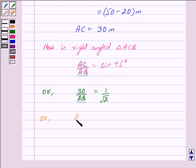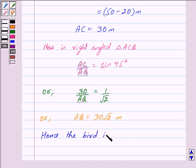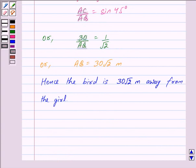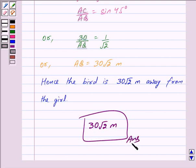Or AQ is equal to 30 root 2 meters. Hence the bird is 30 root 2 meters away from the girl. So we have got our answer as 30 root 2 meters. Hope you have understood the solution. Bye and take care.